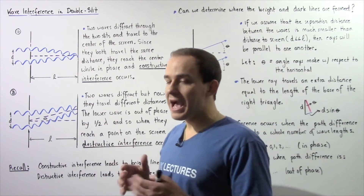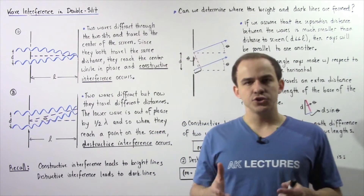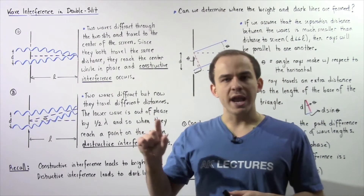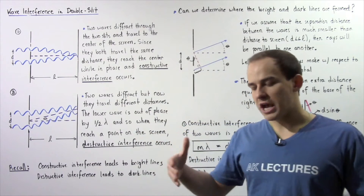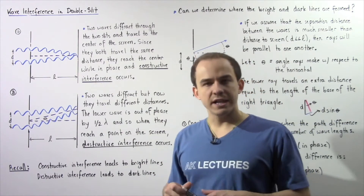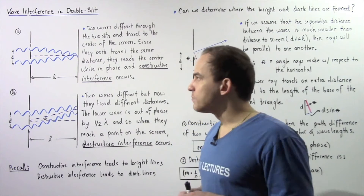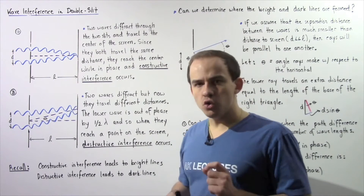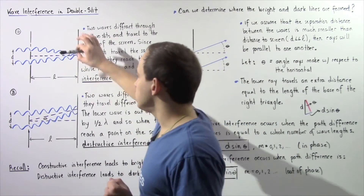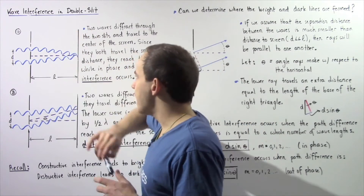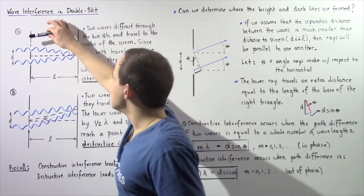it diffracted outward in all different directions and eventually formed many bright and dark lines on the screen placed in front of that double slit. Let's suppose we choose two of these waves that follow the pathway shown in diagram A.